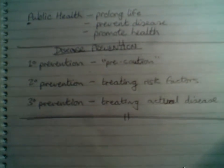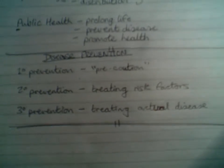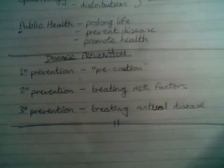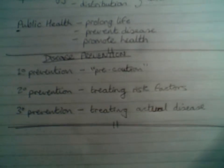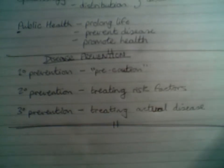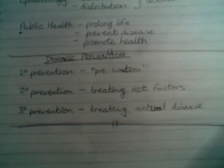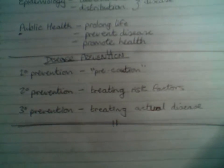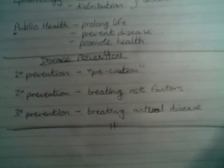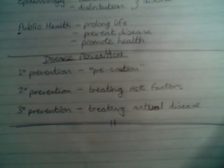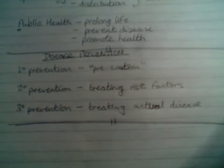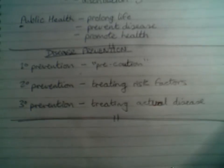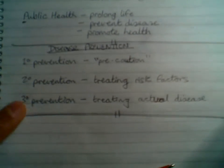Secondary prevention would be treating actual risk factors. Keeping with the same example, this would be running a cervical smear screening program. When we detect pre-cancerous abnormalities in the cervix, we treat those pre-cancerous abnormalities — we're not treating actual disease, we're treating an abnormality associated with going on to become disease. Tertiary prevention — you've probably guessed — is treating actual disease: so our patient already has cervical cancer and we're now doing cancer treatment.